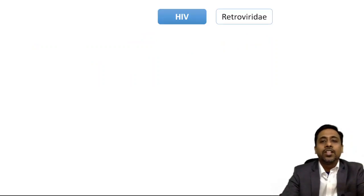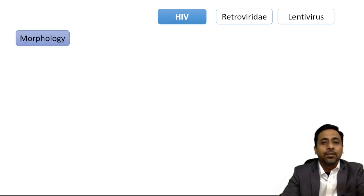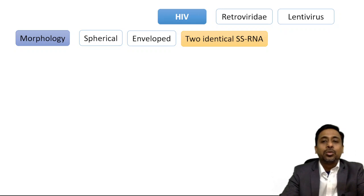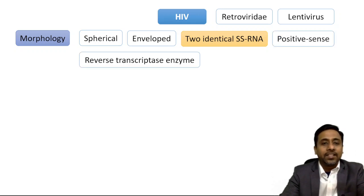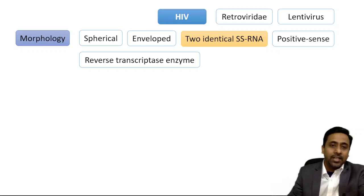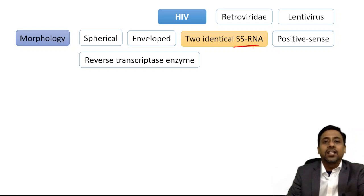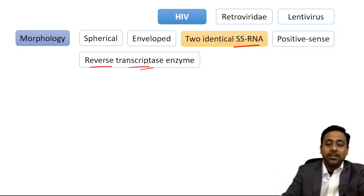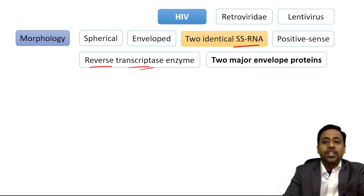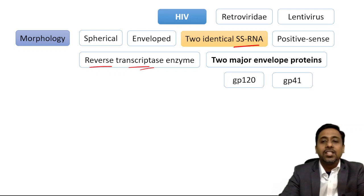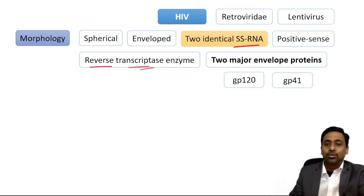HIV belongs to the family Retroviridae, lentivirus subgroup. Morphologically it is spherical and enveloped. It contains two identical single-stranded positive-sense RNA copies and the reverse transcriptase enzyme. There are two major envelope proteins: GP120 and GP41. Remember these two major envelope proteins of HIV — GP120 and GP41.